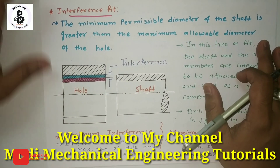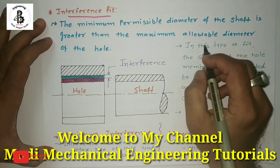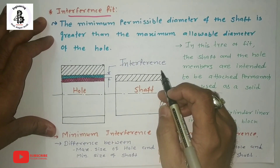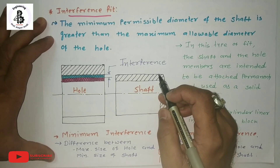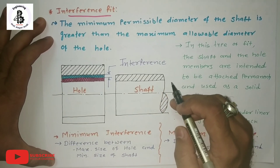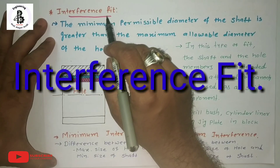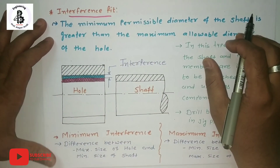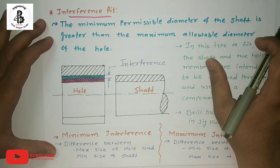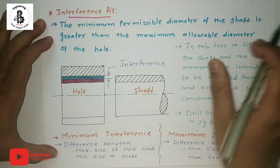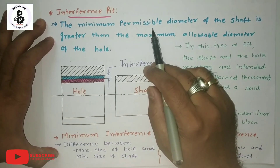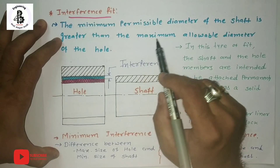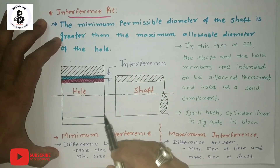Welcome to my YouTube channel, Modi Mechanical Engineering Tutorials. In my previous lectures I already explained the classification of fits and clearance fit. Now I would like to explain, for this lecture, the interference fit. The definition is that the minimum permissible diameter of the shaft is greater than the maximum allowable diameter of the hole.